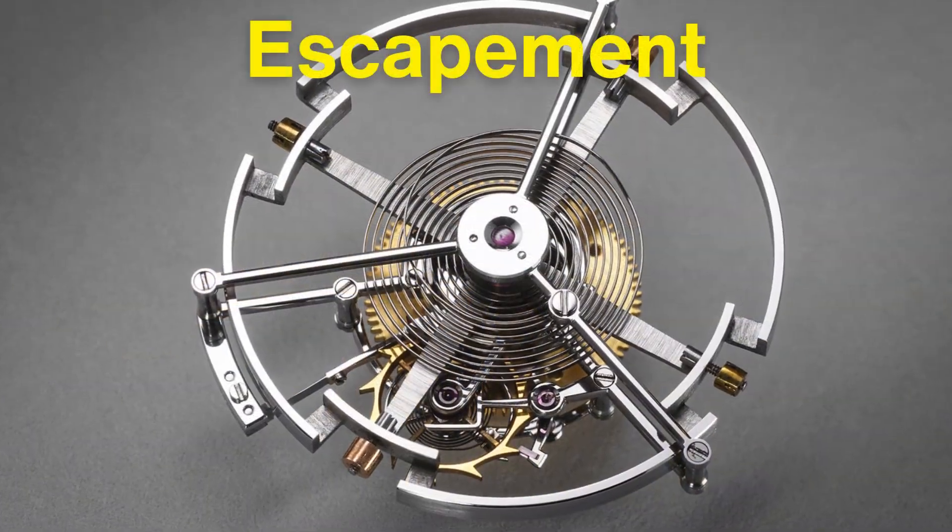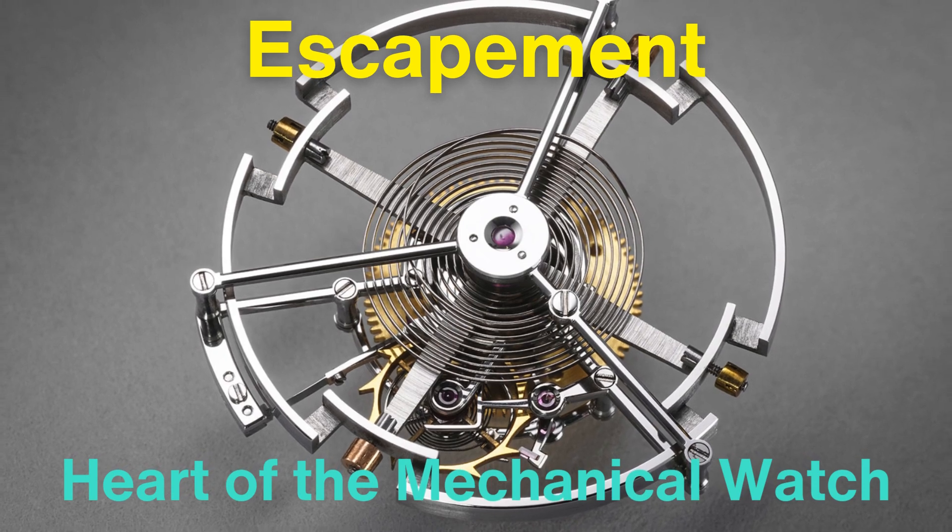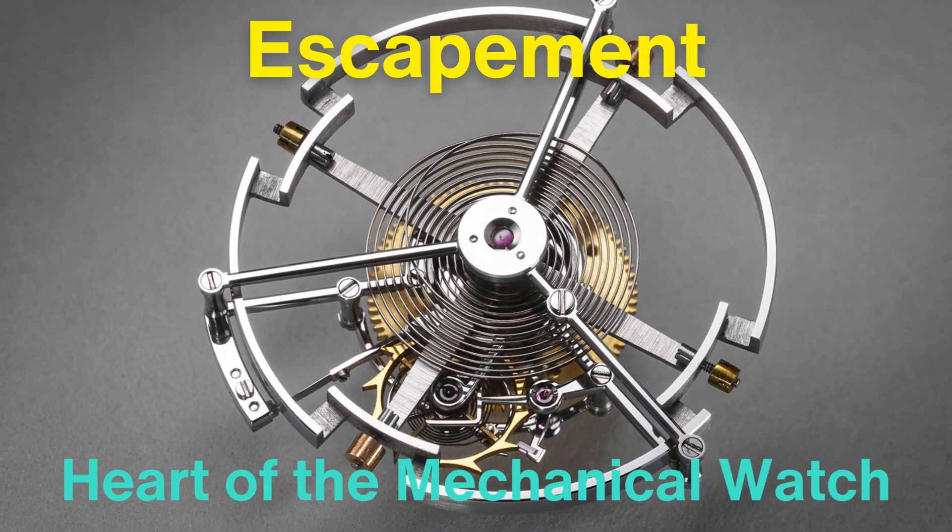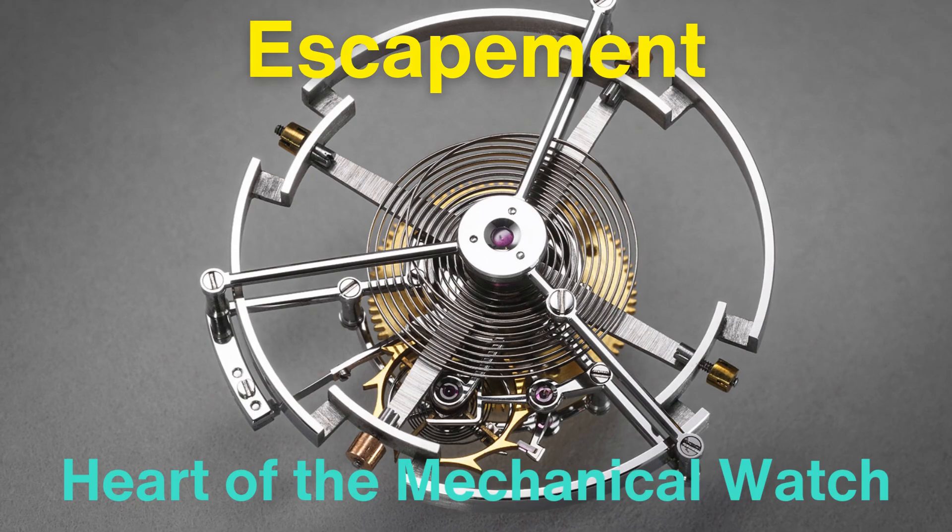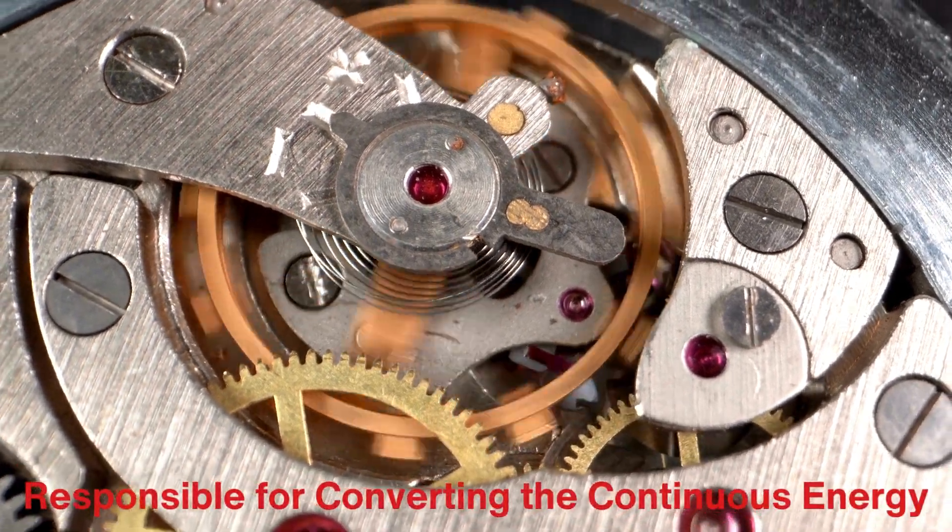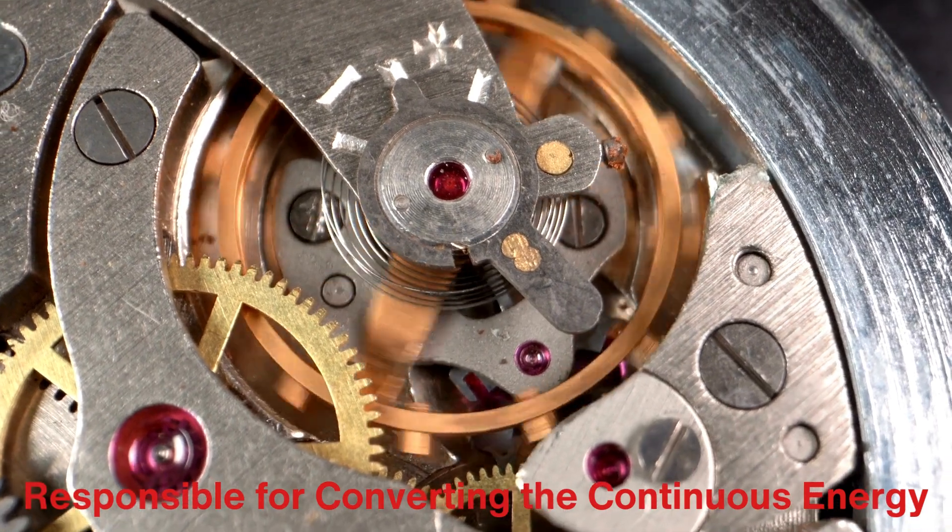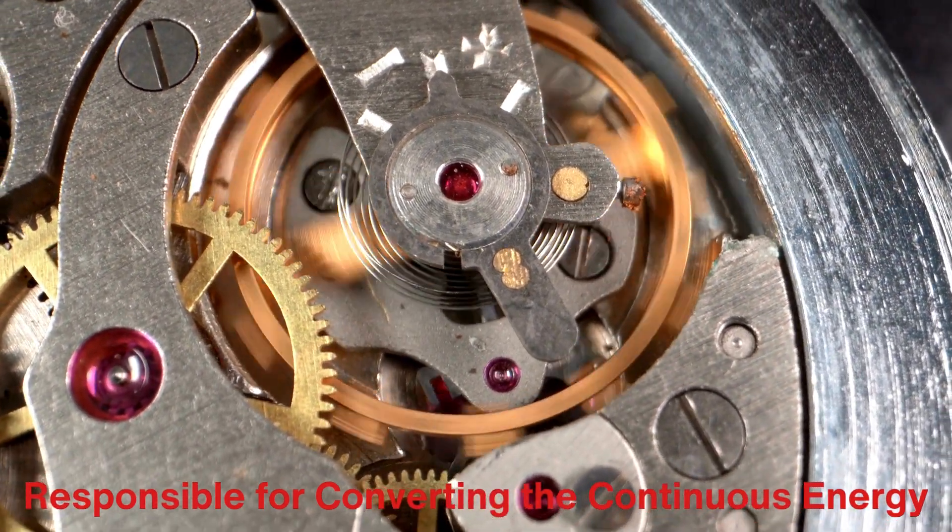The escapement is often called the heart of the mechanical watch, as it ensures that the energy from the mainspring is transferred to the gear train at regular intervals. Think of the escapement as the component responsible for converting the continuous energy from the mainspring into the discrete, periodic ticks we associate with a mechanical watch.